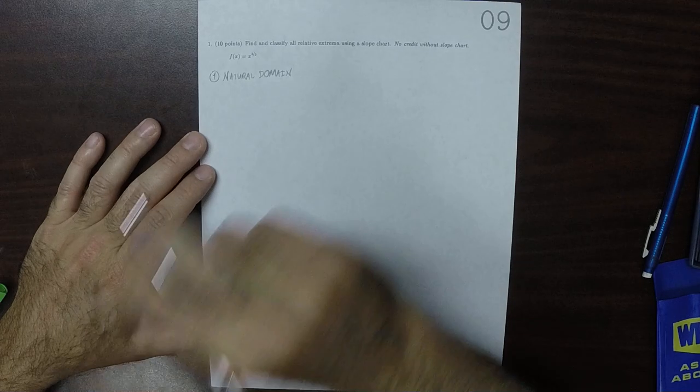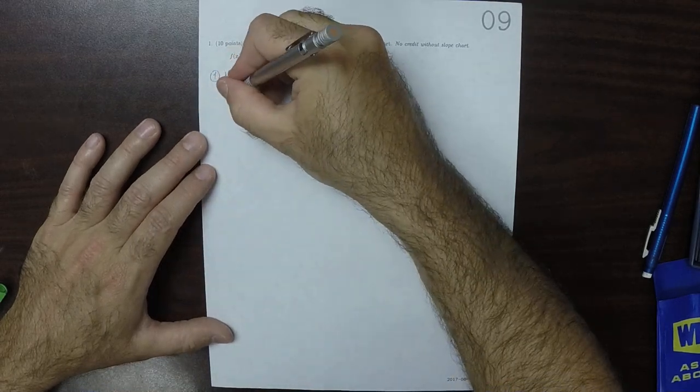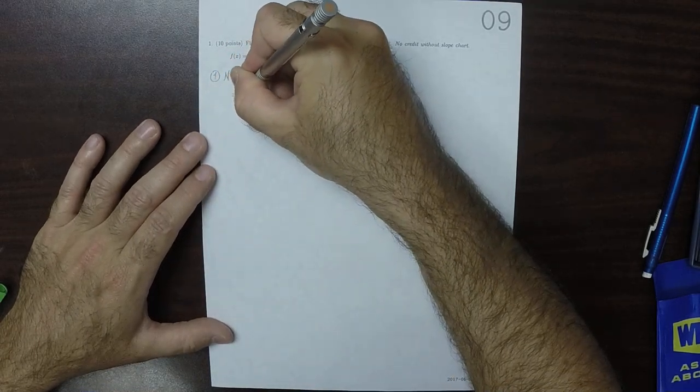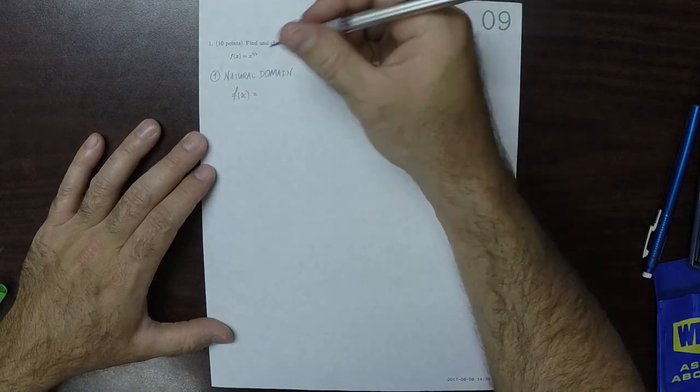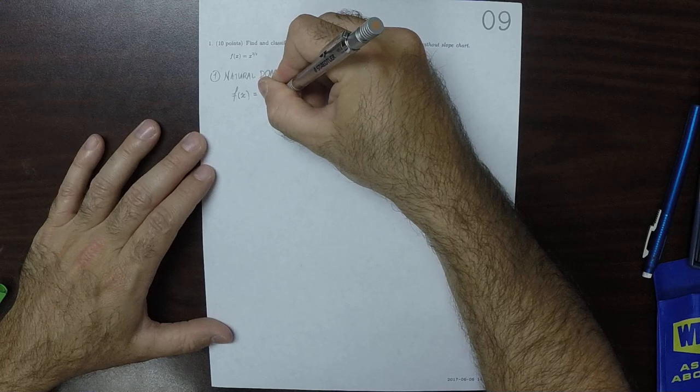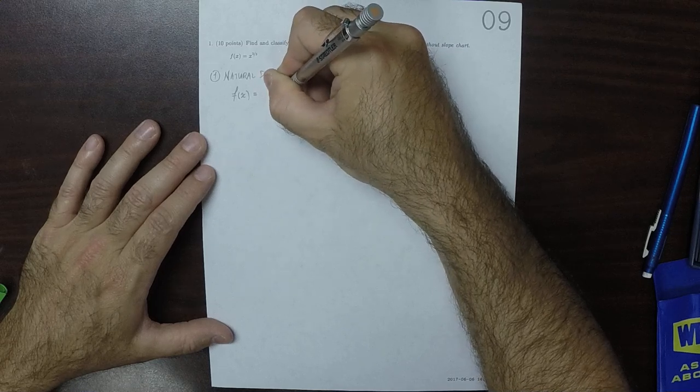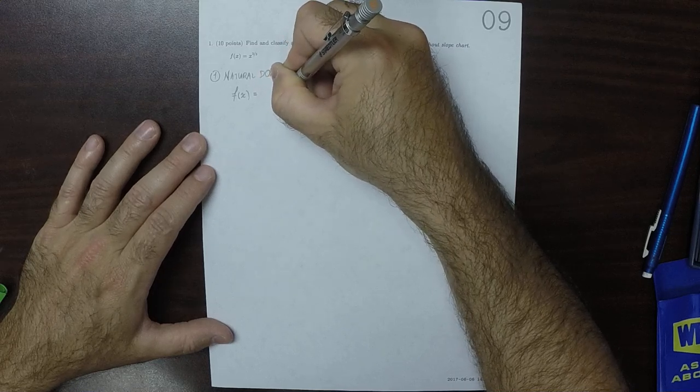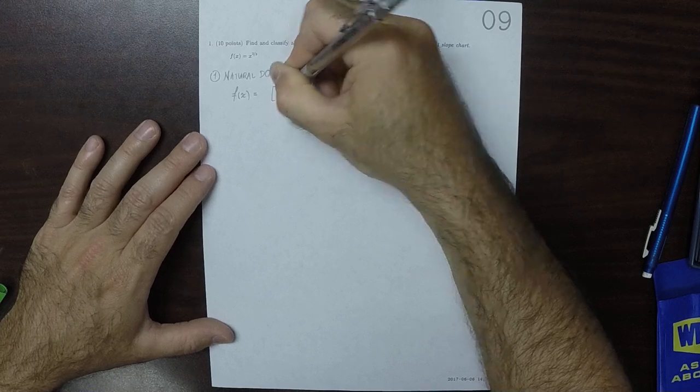Well, you have to recall what x to two-thirds means. f of x can be written, must be written, and understood in this way. It is x to one-third, you do the fractional part first, and then you square it.